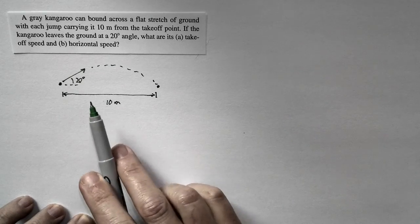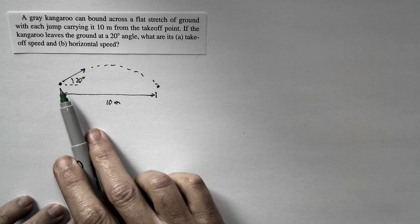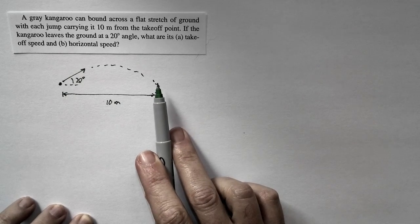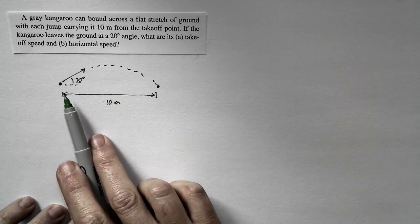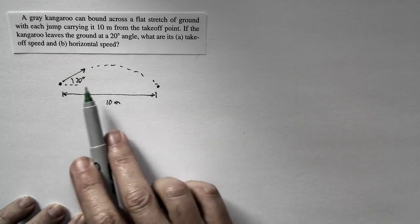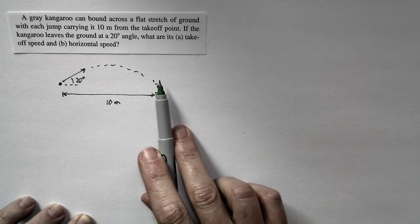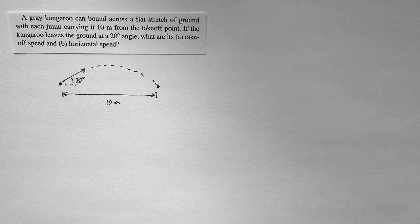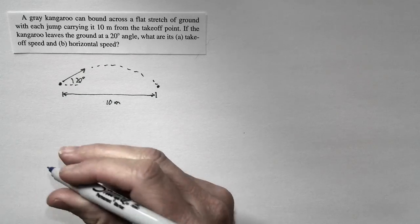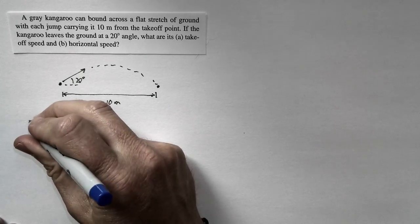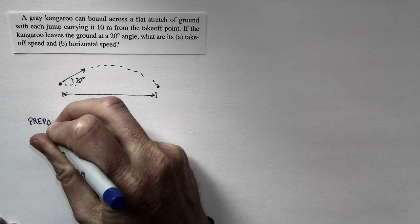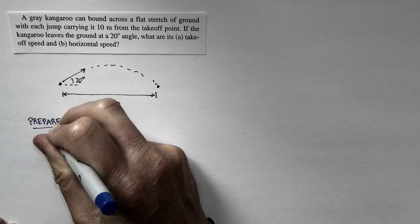This is a projectile motion problem. While the kangaroo is moving from here to here, it's not in contact with the ground. The only force that's acting is gravity, and so the kangaroo is in free fall and it's moving horizontally. We can use the mechanism of all our projectile motion problem solving in order to figure out the details of the kangaroo's motion.